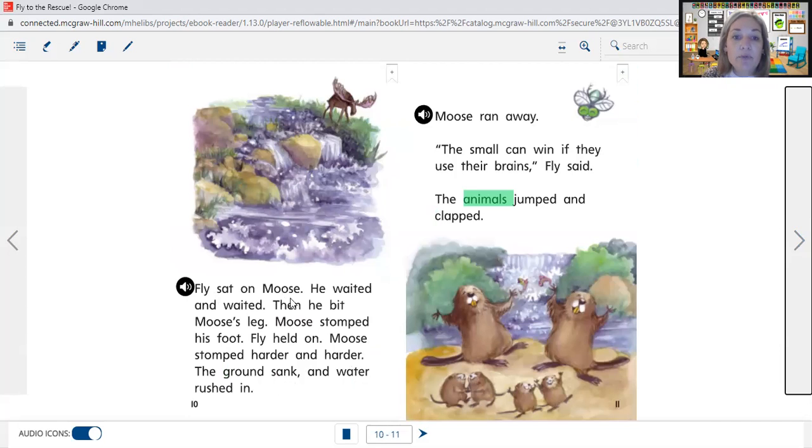Fly sat on Moose. He waited and waited. Then he bit Moose's leg. Moose stomped his foot. Fly held on. Moose stomped harder and harder. The ground sank and water rushed in. Moose ran away. 'The small can win if they use their brains,' Fly said. The animals jumped and clapped.